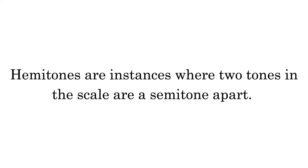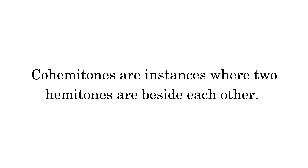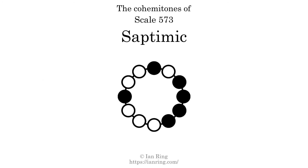Hemitones are instances where two tones in the scale are a semitone apart. This scale has three hemitones. They are at positions here, here, and here. Co-hemitones are instances where two hemitones are beside each other. This scale has two co-hemitones. They are at positions here and here.